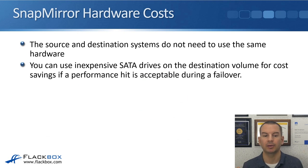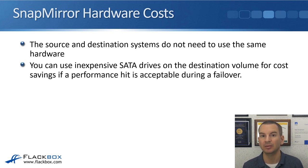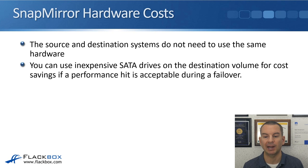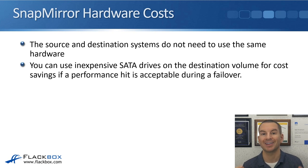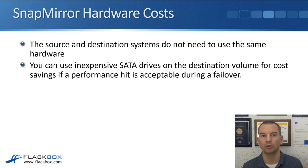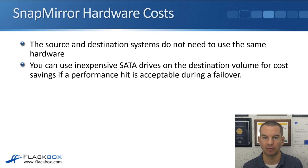With SnapMirror, the source and destination systems do not need to use the same hardware — they don't even need to be running the same software or on ONTAP. You can use inexpensive SATA drives on the destination volume for cost savings if a performance hit is acceptable during a failover. So if you're using SnapMirror DP mirrors for disaster recovery, you can use more expensive drives at the main site and less expensive hardware at the DR site.